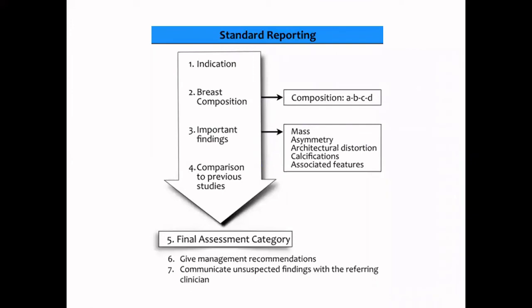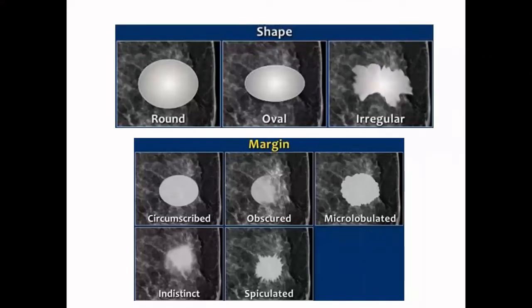Reporting should follow ACR BI-RADS standards, as available on Radiology Assistant. The report must include: indication (screening, diagnostic, or follow-up); breast composition (A, B, C, or D); findings such as mass, asymmetry, architectural distortion, calcifications, and associated features; comparison with any prior studies; assessment category; and recommendations.